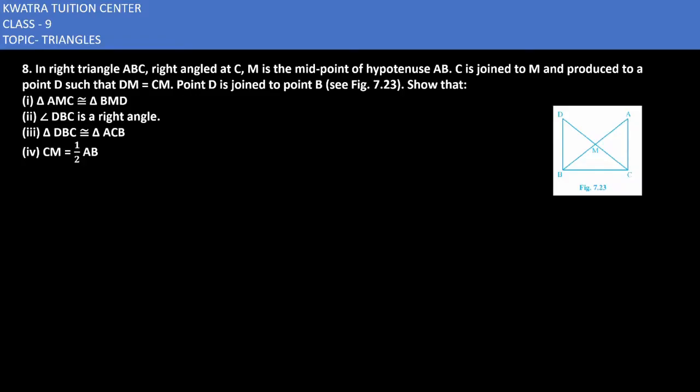M is the midpoint of hypotenuse AB. C is joined to M and produced to a point D such that DM is equal to CM. Point D is joined to point A and B.